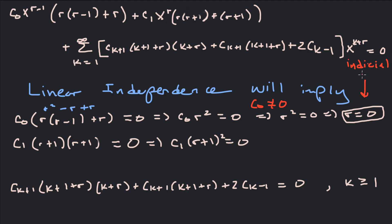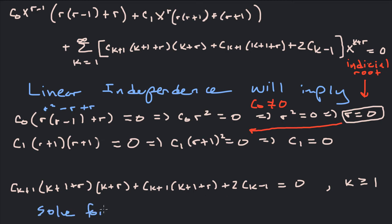The indicial root is r equals 0, and it's actually a repeated root in this example. With r equals 0, the equation c₁(r+1)² equals 0 becomes c₁ times 1 squared equals 0, so c₁ must equal 0. Now we plug r equals 0 into the recurrence relation bracket and solve for c_{k+1}.